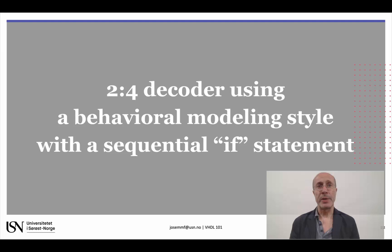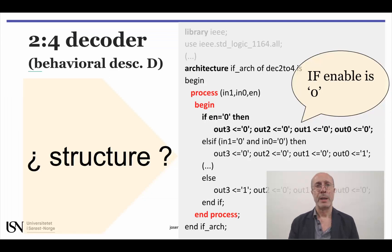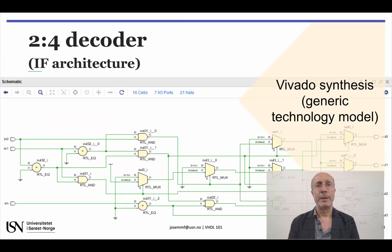We can also use an if statement to build a VHDL description of the 2 to 4 decoder. The conditions presented are evaluated until one is found to be true, and in that case, the corresponding sequence of statements is executed. Notice that this modeling style actually leads to the most complex generic technology representation at the highest cost estimation of 16 cells. Why do you think this happens?